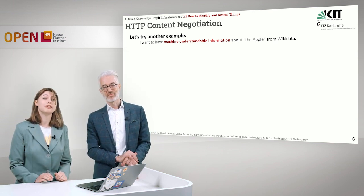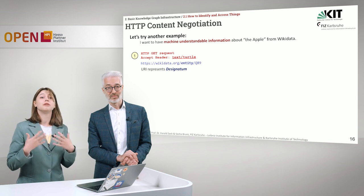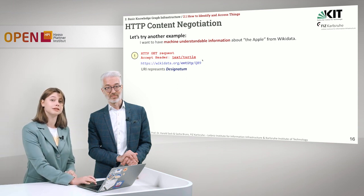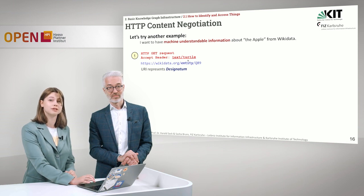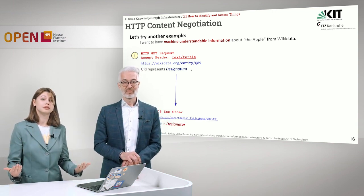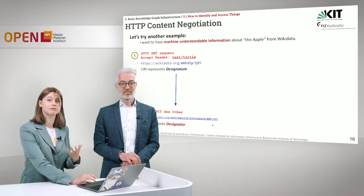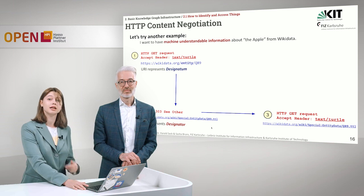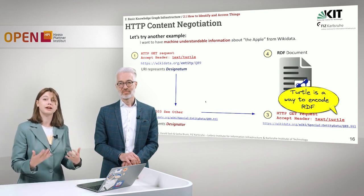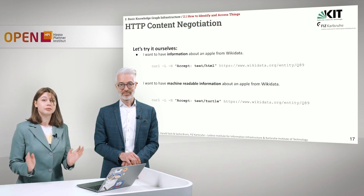Similarly, we can ask for machine-understandable information about the same apple from Wikidata. The process is exactly the same: we write a request to the web server with the same resource identifier Q89 and say we want it in the Turtle format — a machine-readable format. This URI is called the designatum. After receiving the request, the web server answers, searches for the URI in the required format — that URI is the designator — and returns an RDF document. Turtle is a way to encode RDF, and we will talk about it closely later in the lecture.